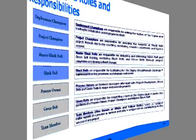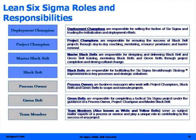Then we have green belts. They're responsible for completing a tactical Six Sigma project under the guidance of the process owner, project champion, and master black belt — and possibly a black belt, depending on how mature and how the organization is structured.